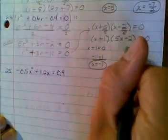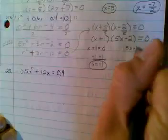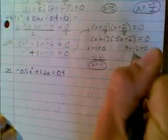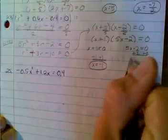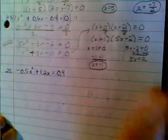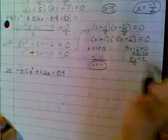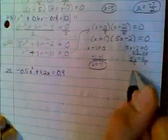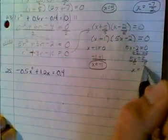And then I have 5x minus 2 equals 0. Add 2 on both sides. So 5x equals 2. Then divide by 5 on both sides. And x equals 2 fifths.